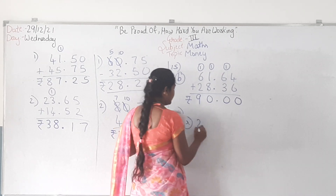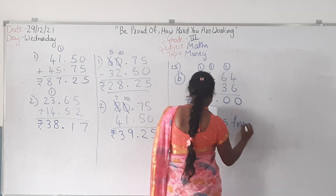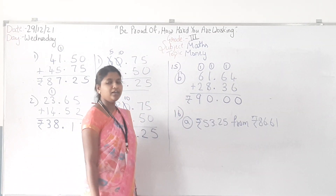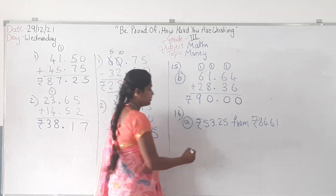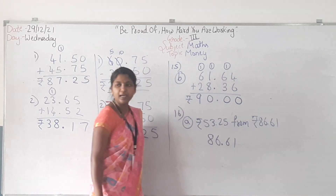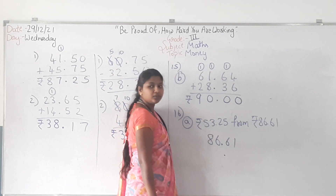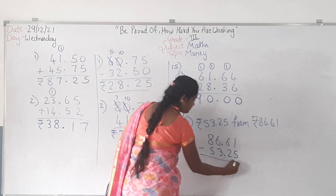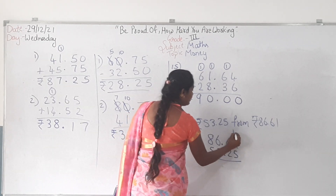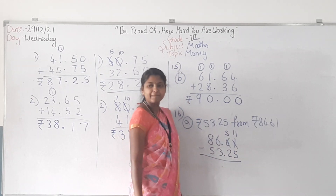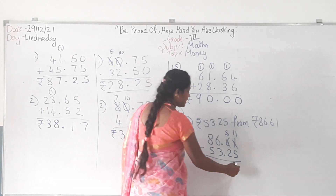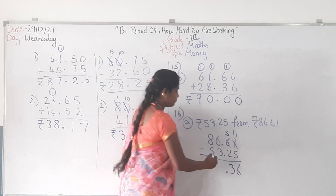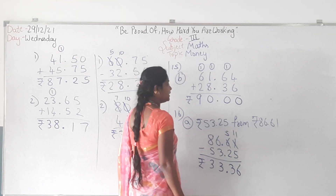For question 16, let me do one problem: rupees 53.25 subtracted from rupees 86.61. Which number will you write first? 86 — because it is the bigger number. So write 86.61, then under it put the point and write 53.25. 1 minus 5 — can you do? No. Take borrow: this becomes 11, this reduces to 5. 11 minus 5 is 6. 5 minus 2 is 3. Then point. 6 minus 3 is 3. 8 minus 5 is 3. So the answer is rupees 33.36.